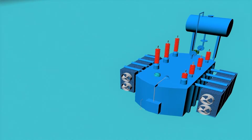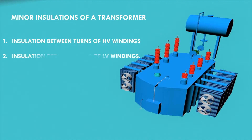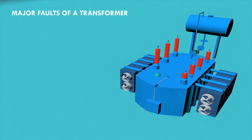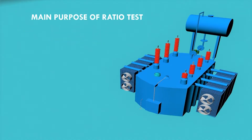Minor insulation of a transformer is the intra-turn insulation — that is, the insulation between turns of the HV windings and the insulation between the turns of the LV windings. Major faults of a transformer include insulation failure between HV and LV windings and insulation failure between any winding and ground.